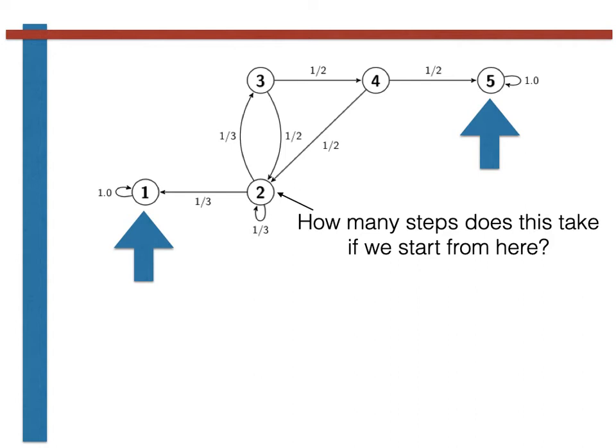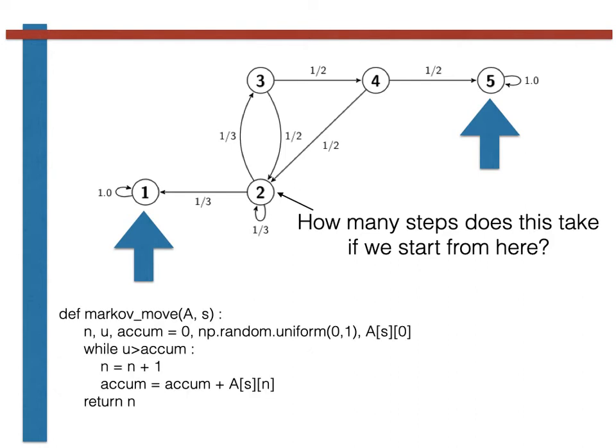Now clearly, the number of steps it takes before we get absorbed in one of the recurrent states is a random variable. Our first step in solving this question of how many steps the chain takes prior to absorption is going to be to write a program to sample this new kind of random variable. To write this program, we are going to use the Markov move function that is shown here and has been introduced in a previous video.